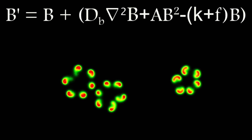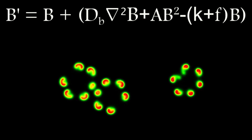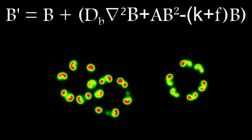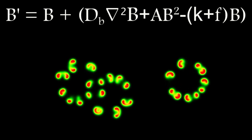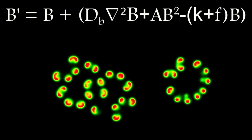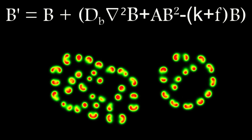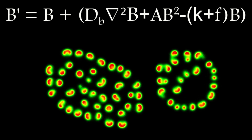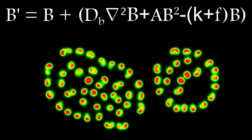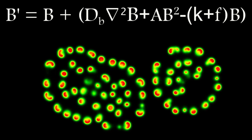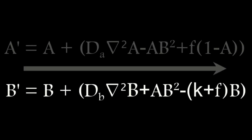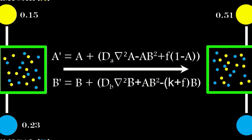The diminishment term is proportional to the concentration of B that is currently present, and also to the sum of the two constants — namely the feed rate F and kill rate K. The Laplacian for B uses the same kernel values as A, but is applied to the concentration for chemical B at the pixel being examined, and in the example here it yields a value of 0.82.